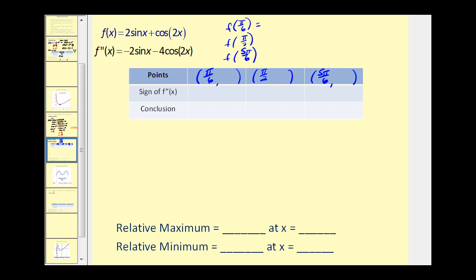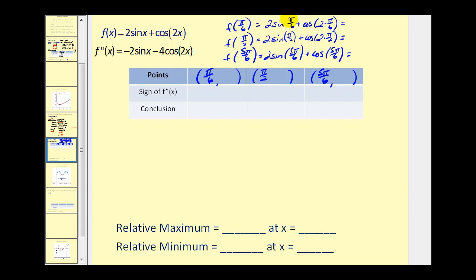Putting the critical numbers in order: for f(pi/6), sine of pi over six is one half, so two times one half is one, plus cosine of pi over three equals one half, giving a y-value of three halves. For f(pi/2), two times sine of pi is two times one equals two, plus cosine of pi equals negative one, giving a value of one. For f(5pi/6), we get one plus one half, or three halves again. Now we determine the sign of the second derivative at each critical number.